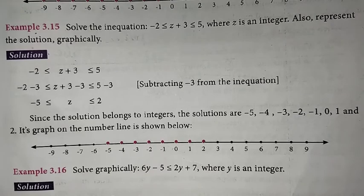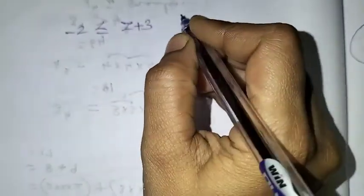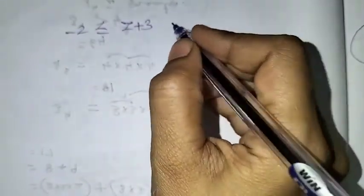So first of all, we solve the equation. What is the equation? Minus 2 less than or equal to z plus 3 less than or equal to 5.